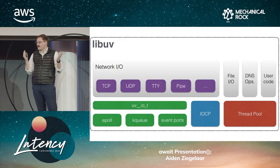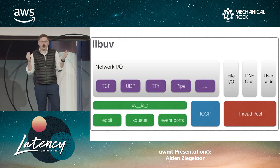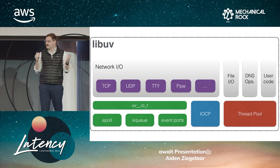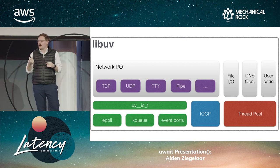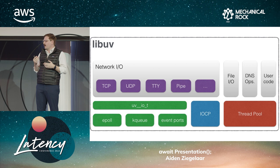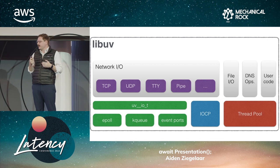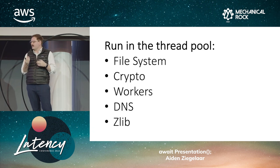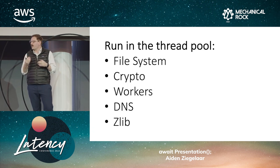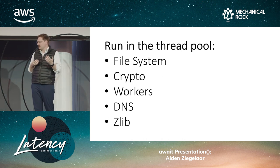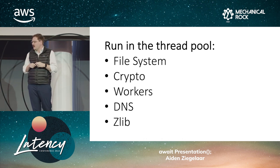But what happens when the work we're doing can't actually be represented by a file descriptor? For work that needs to occur synchronously in a thread, we offload this work to a thread pool. From the Node.js perspective, in the thread pool we run file I/O, cryptographic functions, workers, DNS lookups, and compression. So let's take a look at the structure of this LibUV thread pool and exactly how it operates.